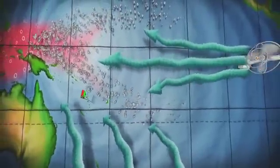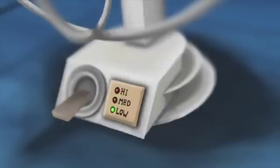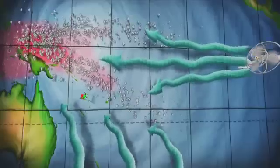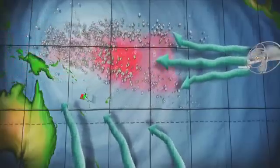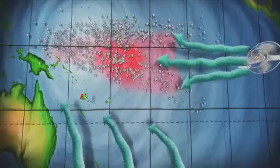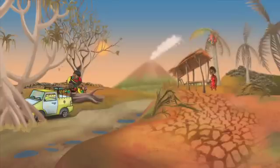Some years the trade winds weaken, causing the warm pool and the cloud nasara that forms above it to move away from Vanuatu. The Meteor Office calls this El Nino. El Nino has a big influence on our lives.